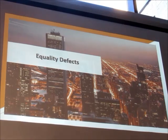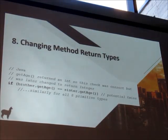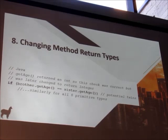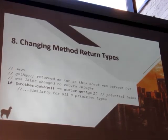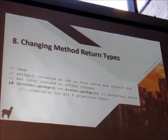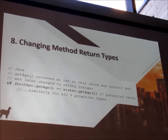Another category of defects is equality defects. getAge() was a method that used to return a primitive integer, and double equals was the correct way to check primitives for equality. Then we realized that if a user didn't input their age it should be null, so we changed getAge() to return an Integer wrapper object instead of a primitive. It still compiles and runs, but without realizing it, we completely broke the logic.